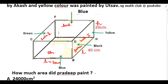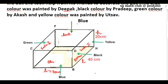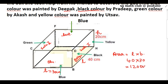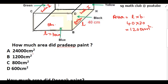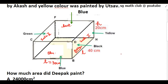The next question is: how much area did Pradip paint? Pradip painted the black color, which is at the bottom. So the dimension is length × breadth. Since it is a rectangle, the formula is length × breadth — here length is 40 and breadth is 30 — so the area painted by Pradip is 1,200 centimeter square.